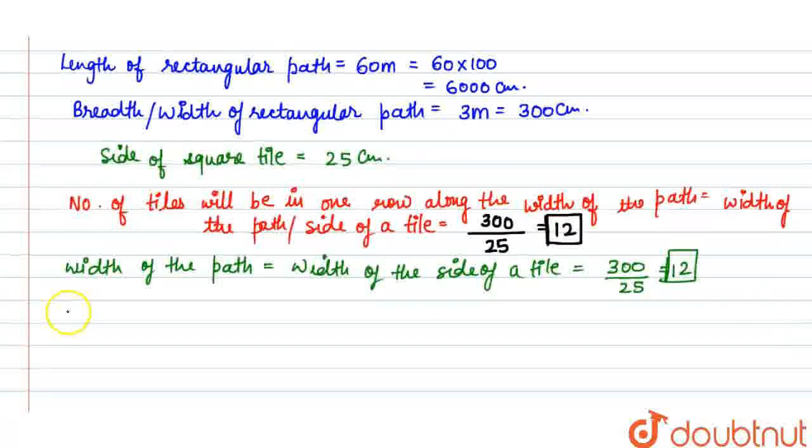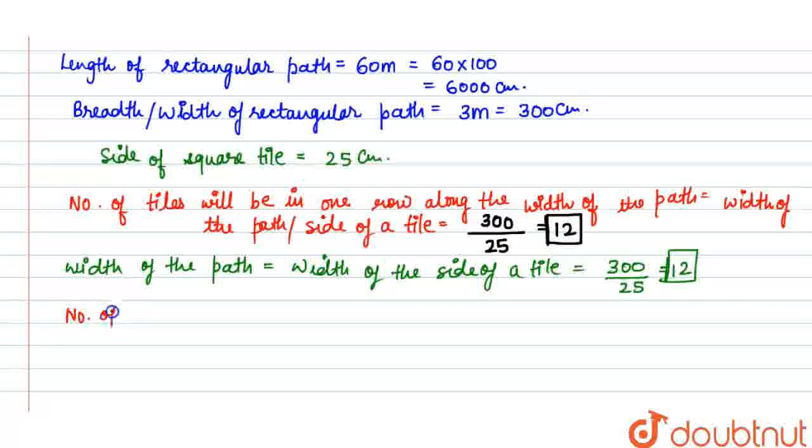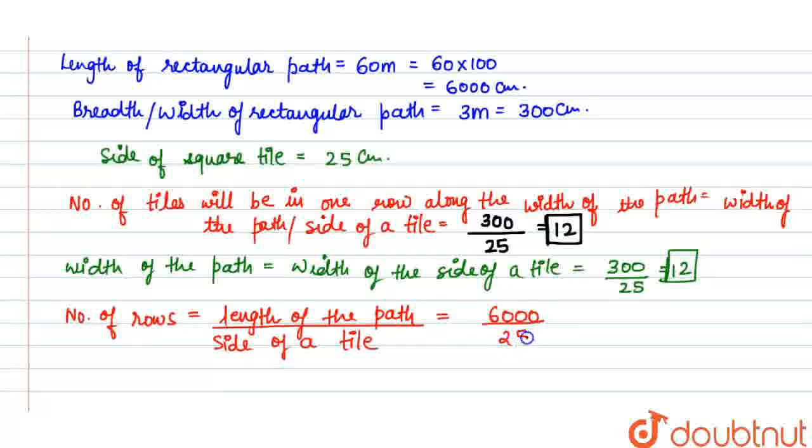Now our last part: find the number of tiles used to make this path. Number of rows equals to length of the path divided by side of a tile. Length of the path is 6000 meter divided by side of a tile 25, so number of rows is 240. So we have three parts in this question and we got three answers. Thank you.